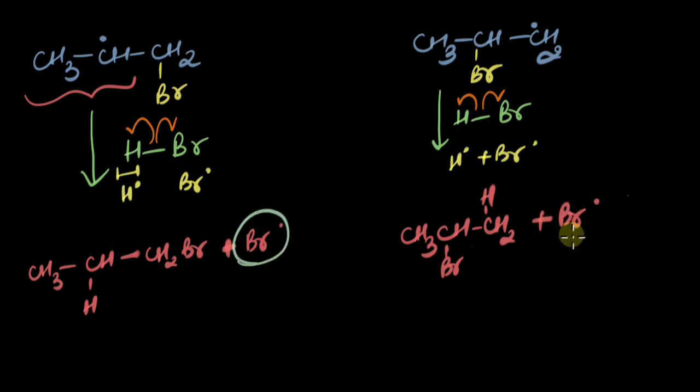What are these Br atoms going to do? They are going to react with two other molecules of alkenes and this reaction continues in the same manner. So what is the major product?